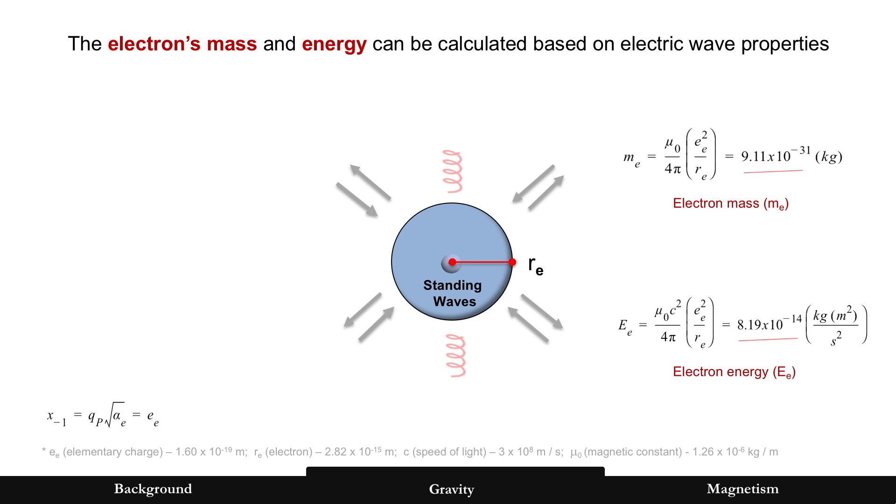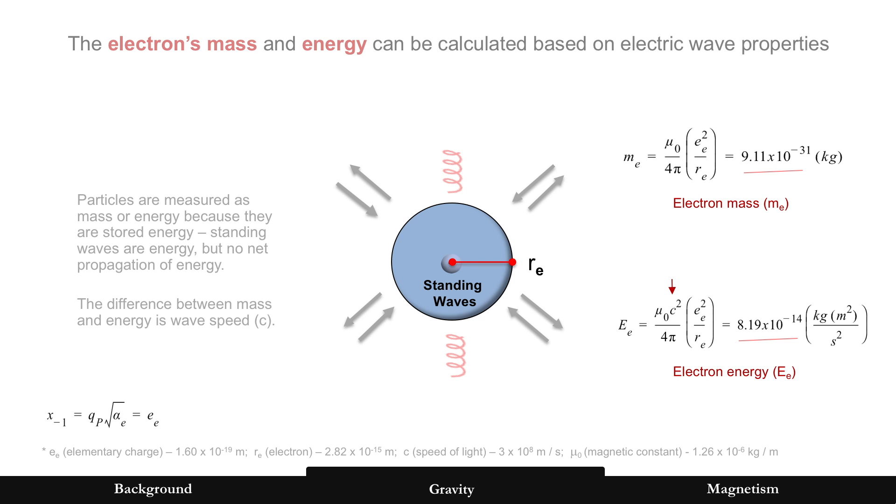Now, the electron's mass can be derived as following, and so can the electron's energy. And the only difference in that equation is that c squared. It's the little c there. So the difference between mass and energy is wave speed. And what is particle? Well, particle can be measured as either mass or energy, typically because they are stored energy. And what's a standing wave? A standing wave has energy, but it's no net propagation of energy. It's stored energy. So everything that we define within that radius, Re, which is electron's classical radius, is stored energy. It becomes a particle.